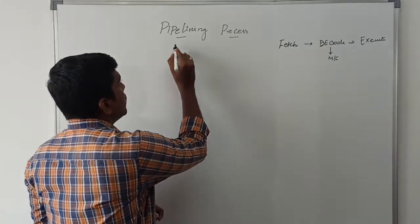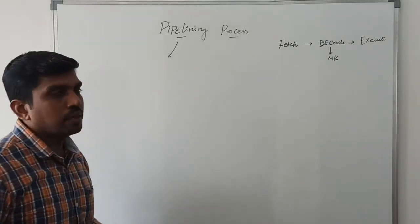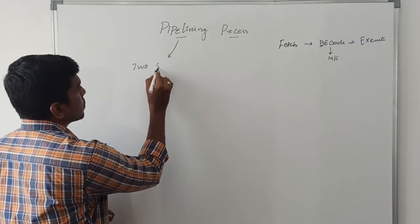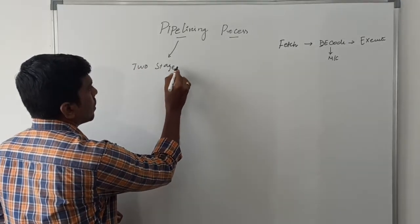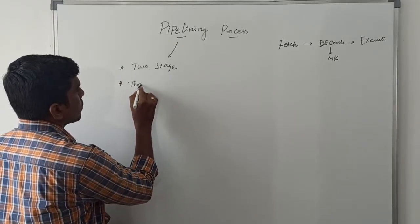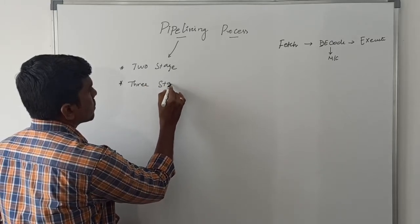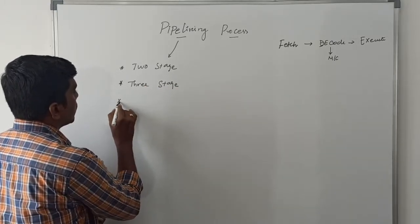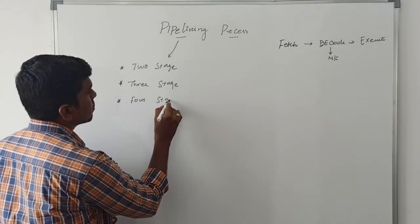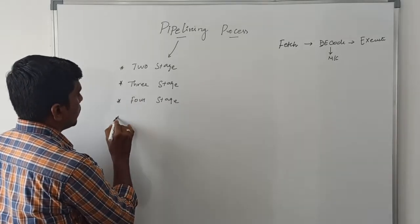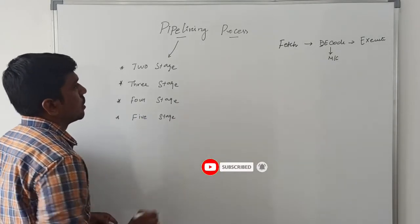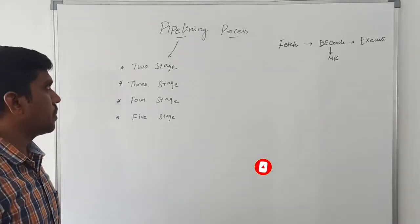These three operations are simultaneously performed — that is called the pipelining process. The pipelining process is classified into different types: two-stage, three-stage, four-stage, and five-stage pipelining.